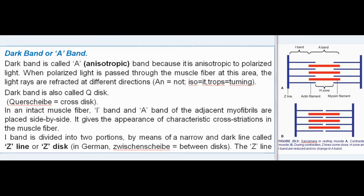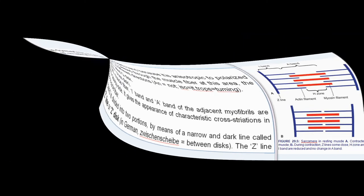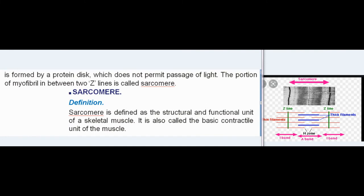In an intact muscle fiber, I band and A band of the adjacent myofibrils are placed side by side. It gives the appearance of characteristic cross-striations in the muscle fiber. I band is divided into two portions by means of a narrow and dark line called Z-line or Z-disc (in German, Zwischenscheibe = between discs). The Z-line is formed by a protein disc which does not permit passage of light. The portion of myofibril in between two Z-lines is called sarcomere.